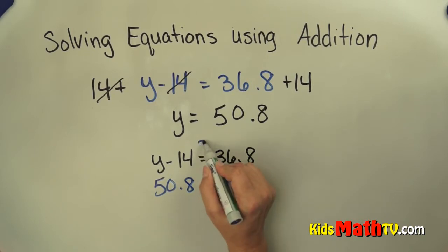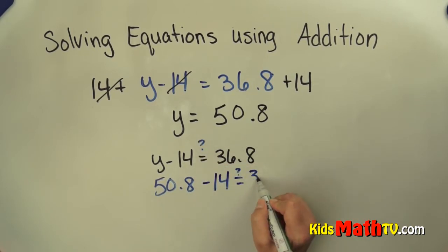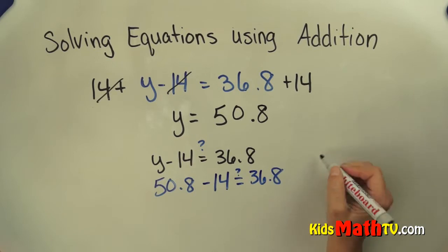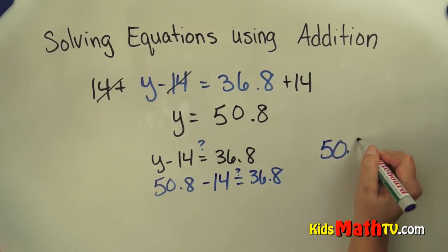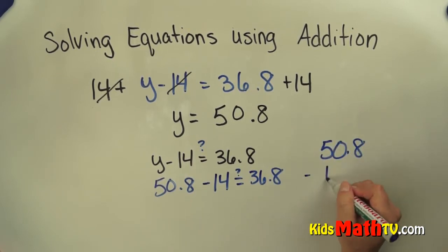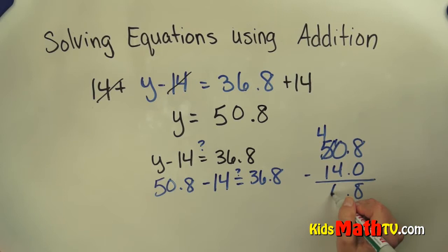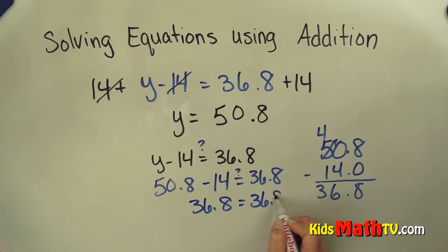Does that give me 36 and 8 tenths? We have 50 and 8 tenths subtract 14 and 0 tenths, which is 8, borrow, indeed 36 and 8 tenths equals 36 and 8 tenths.